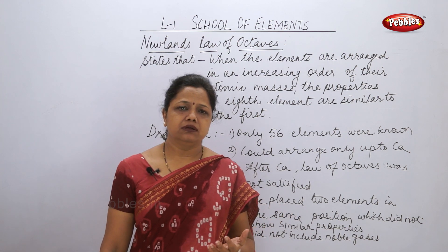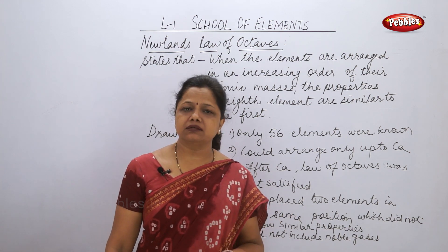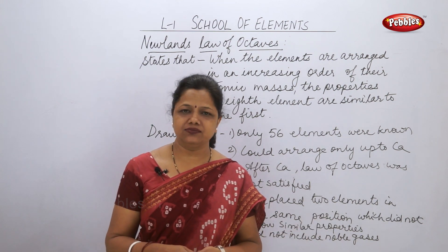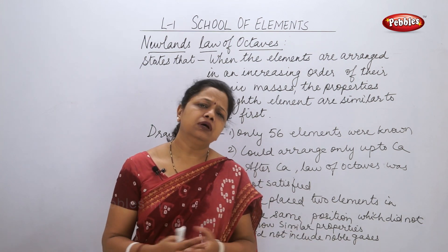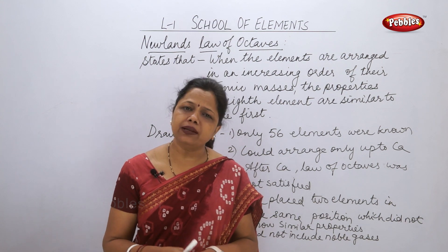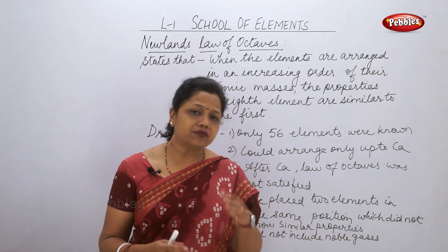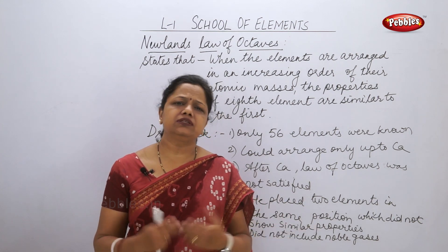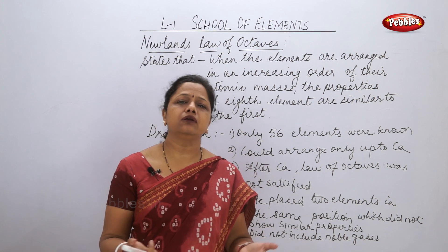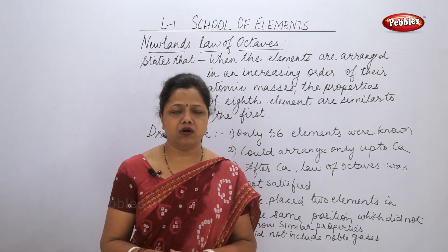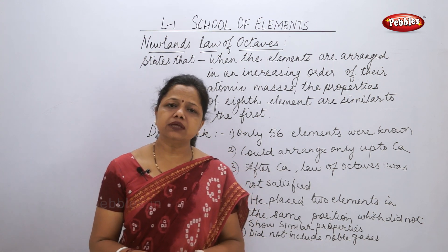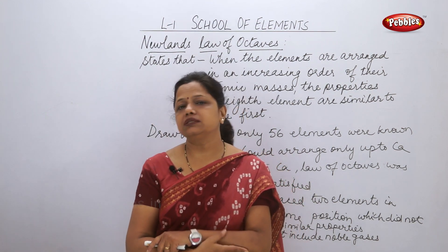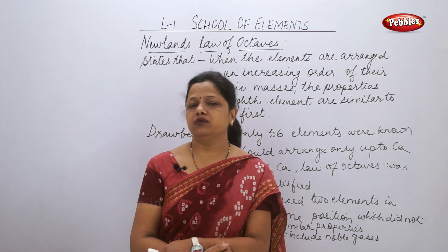But was Newland's Law successful? Was it successful for all 56 elements known at the time? It was not successful. He could find only some elements which showed similar properties after every eighth element. There were some features which were actually drawbacks of Newland's Law of Octaves.